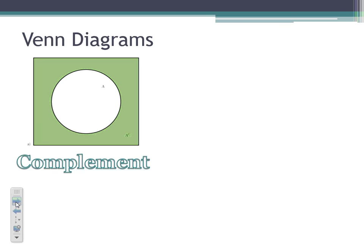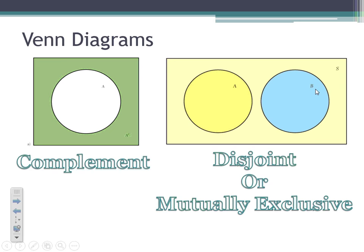If we're talking about disjoint or mutually exclusive events, we have event A and event B, and notice they are completely separate. The rectangle as a whole represents the entire sample space. In this Venn diagram, you're either A or you're B. The beige-colored area outside both circles would represent the complement of A and the complement of B — not A and not B. That's how we represent disjoint or mutually exclusive events within a Venn diagram.